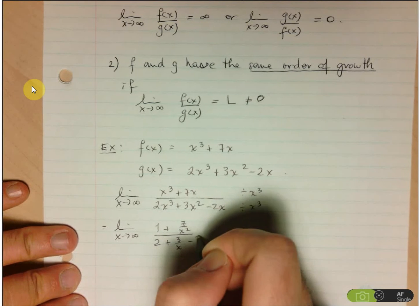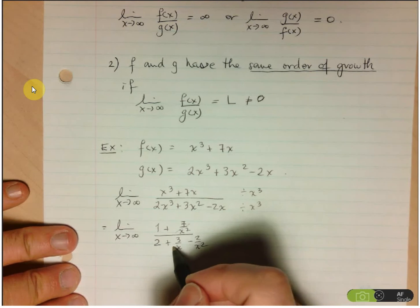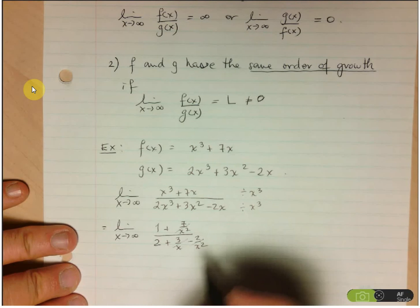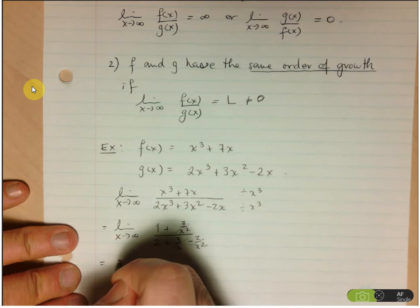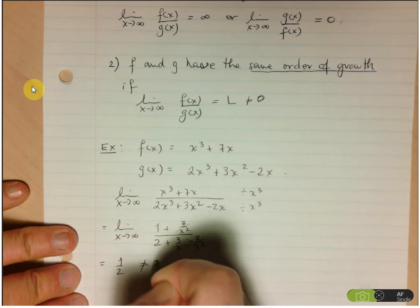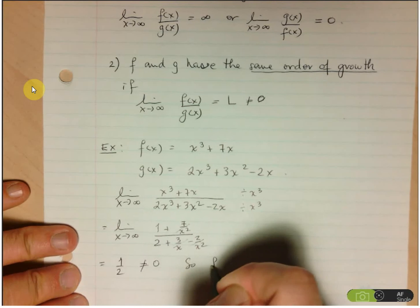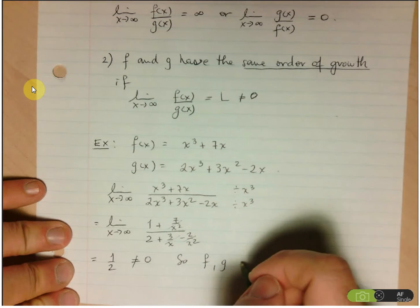So, we have 1 plus 7 over x squared over 2 plus 3 over x minus 2 over x squared. And these terms all approach 0 as x goes to infinity, and so we're left with 1 half, and that's not equal to 0. So, f and g have the same order of growth.